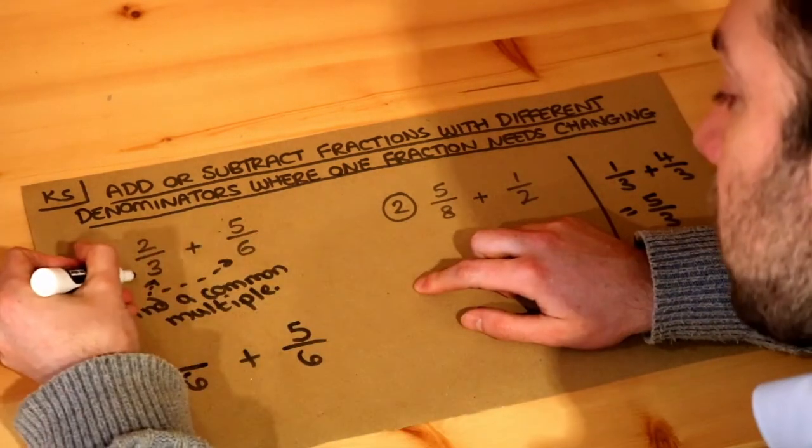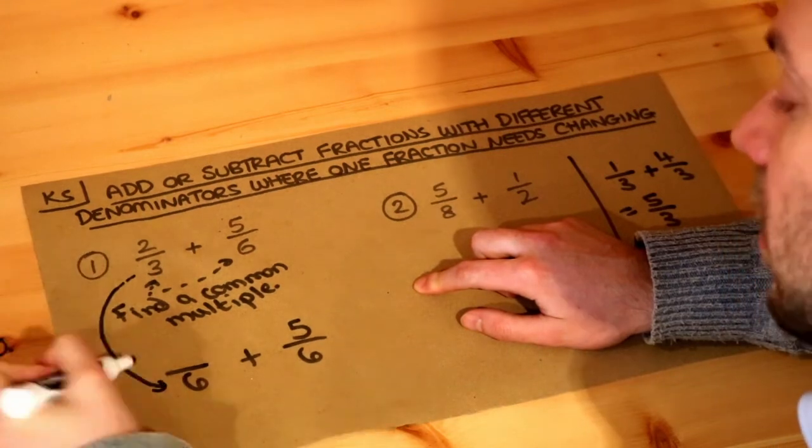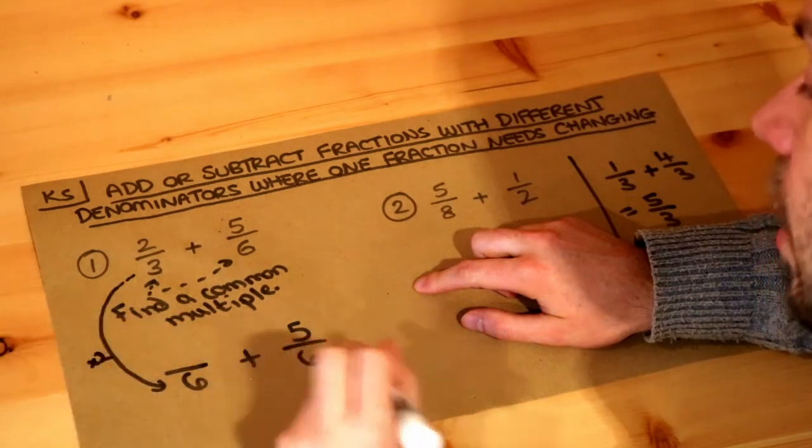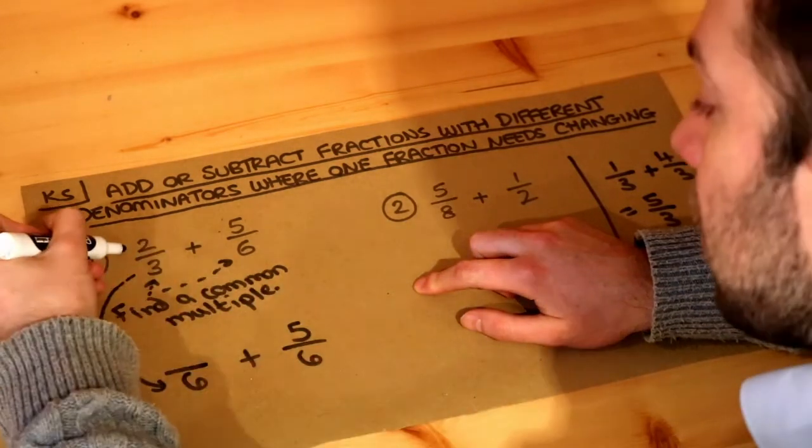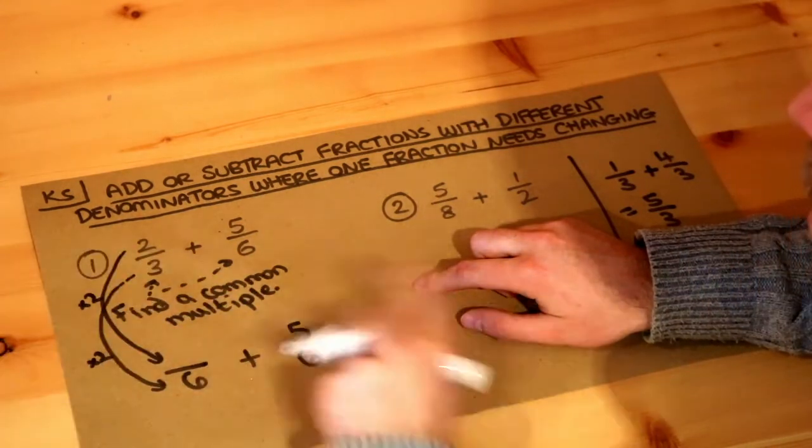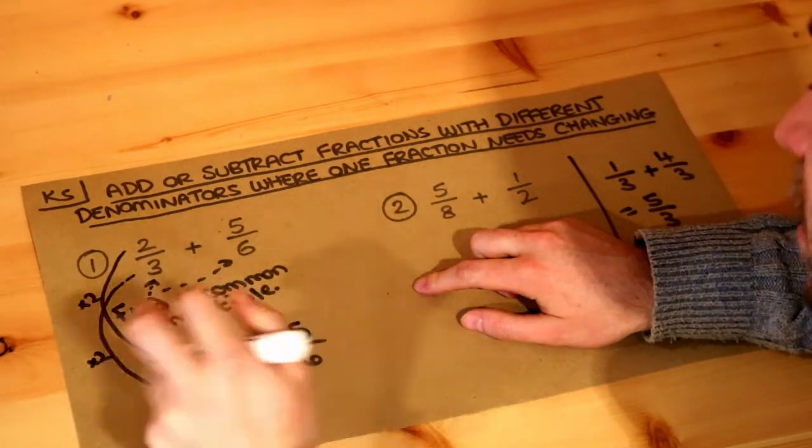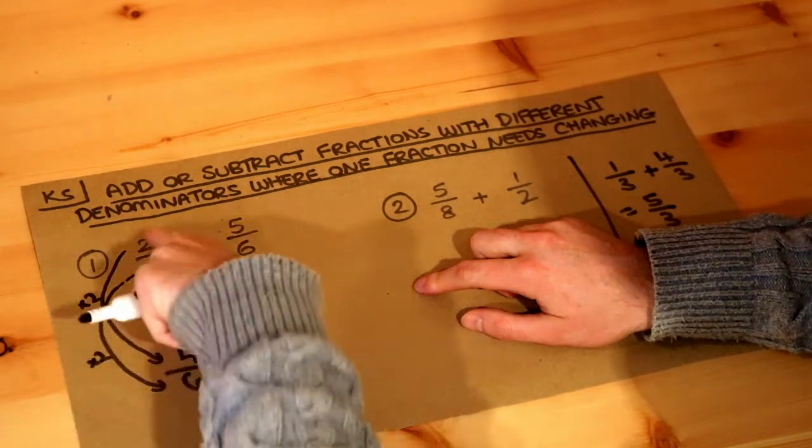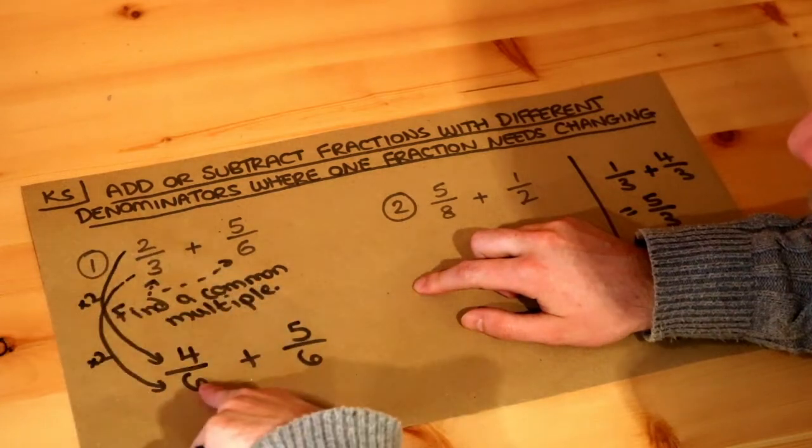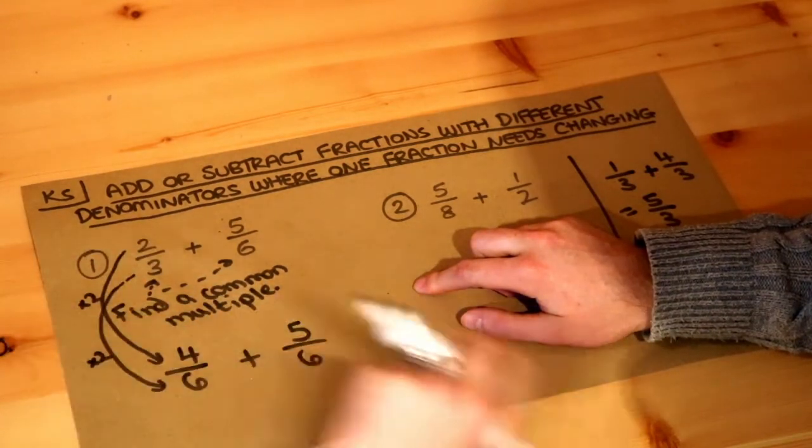So in this case, what's happened to the three? What has it been multiplied by? Well it's twice as big. Three times two is six. So we have to do the same to the numerator. So that two we also have to make twice as big. So two if we make that twice as big we get four. So two thirds is the same as four sixths. We've times the bottom by two so we have to times the top by two as well.